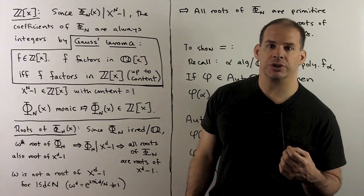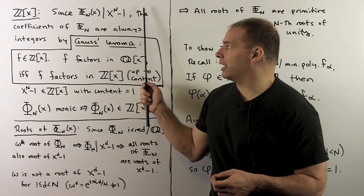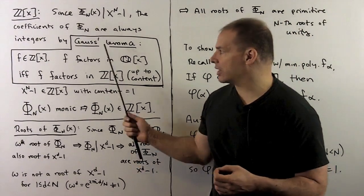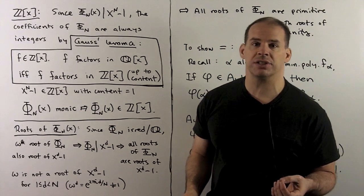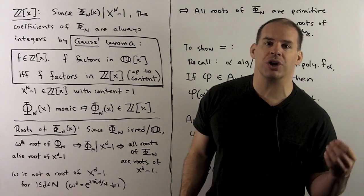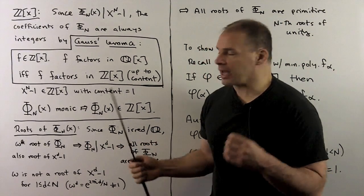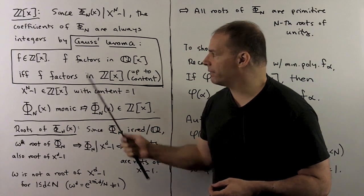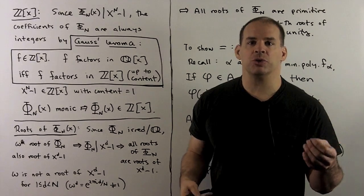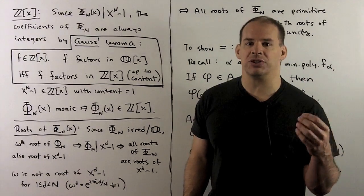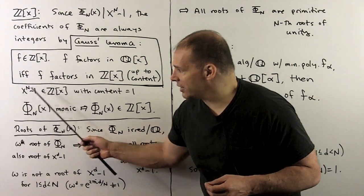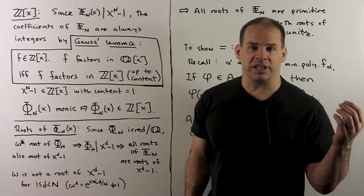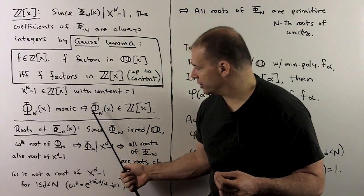Let's show the coefficients are integers. This follows from Gauss's Lemma. We have φₙ divides x^n − 1, so x^n − 1 = φₙ times a polynomial with rational coefficients. Gauss's Lemma says: a polynomial f with integer coefficients factors over the rationals if and only if it factors over the integers, up to content. In our case, x^n − 1 has integer coefficients, content equal to 1, and φₙ is monic, so there's no need to rescale. Therefore φₙ has integer coefficients.